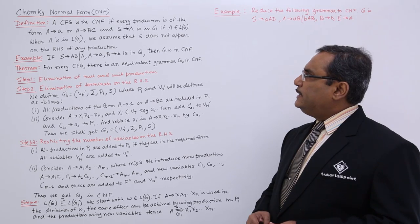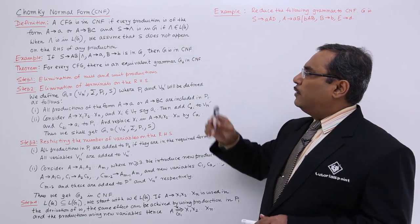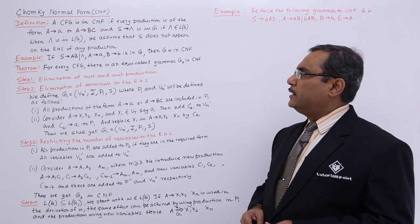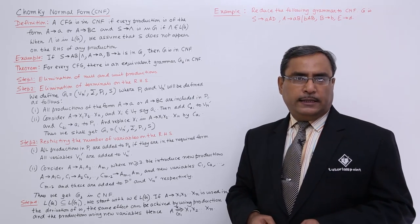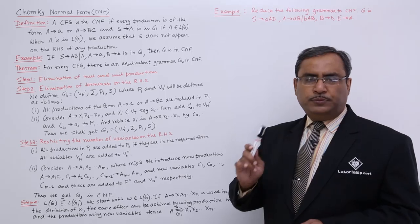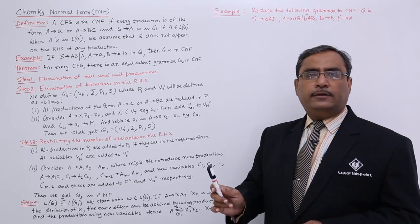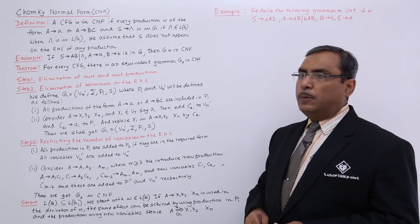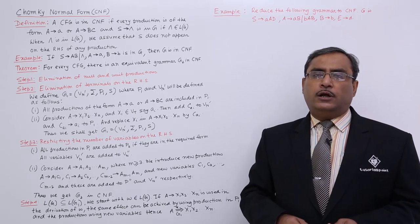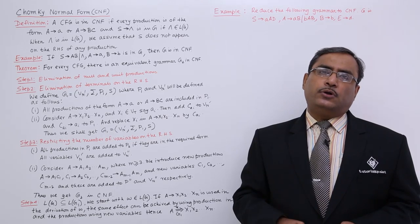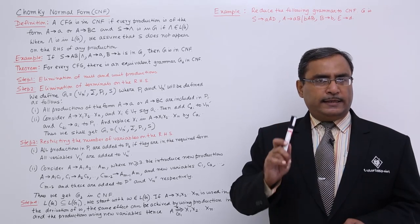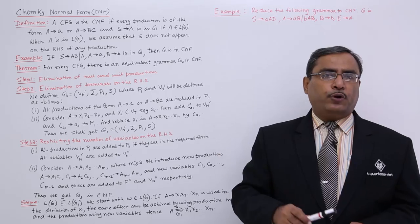And S produces kappa is in G, if kappa belongs to L of G. We assume that S does not appear on the right hand side of any production. That means, S produces kappa will be allowed if null is an element of L of G, but we shall assume that S will not appear on the right hand side of any production. So, this is the Chomsky Normal Form.